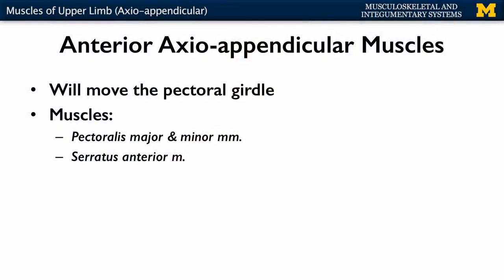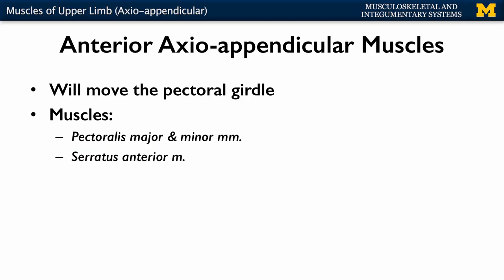So moving the pectoral girdle in addition to the glenohumeral joint. When we're talking anteriorly, the main muscles that we're talking about are your pectoralis muscles. We've probably all heard of these, and when we think of the pectoralis muscles, we're mainly thinking about the pectoralis major, and deep to the pectoralis major is the pec minor. On this side you're going to have your serratus anterior muscles. Let's start with pectoralis major.